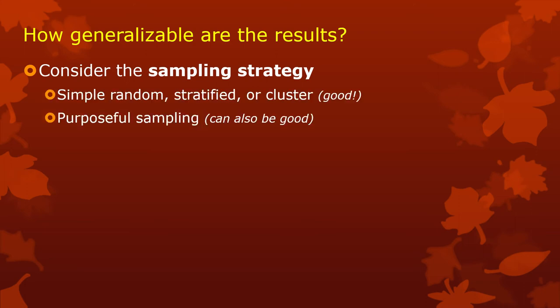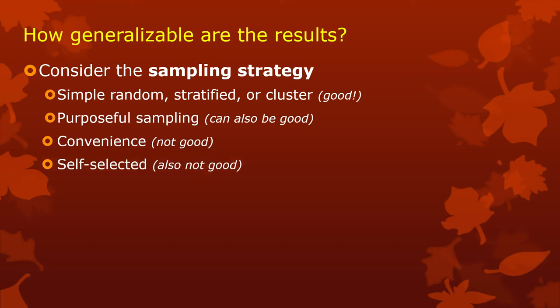So how generalizable are the results of our study? If we used random, stratified, or cluster sampling, then it was a good strategy. If we used purposive sampling, that can also be good if it was done well. But convenience sampling and self-selected sampling are not good. Unfortunately, convenience and self-selecting sampling are what we do in psychology and a lot of sciences involving people, because it's hard to make people participate in studies. You can randomly sample from all college students, but you can't force those students to actually respond to your survey. So often we do convenience sampling — intro psych students — and those are also self-selecting samples, which tends to be non-representative.